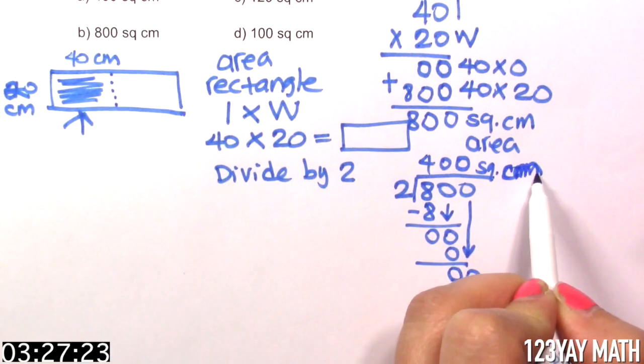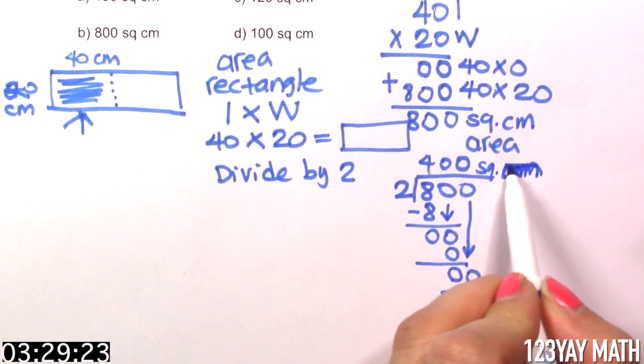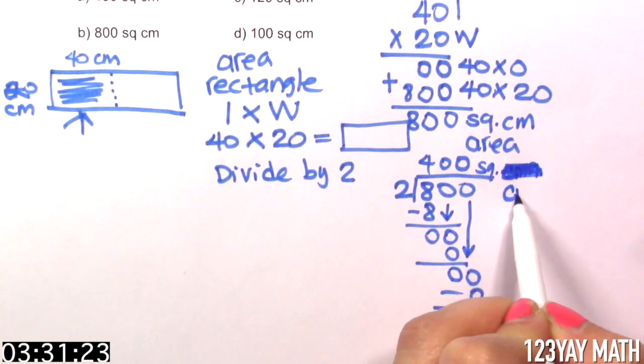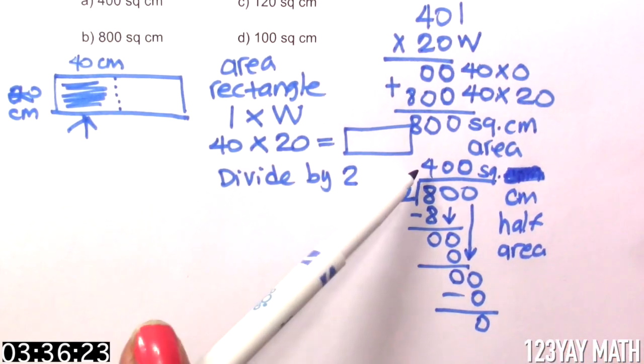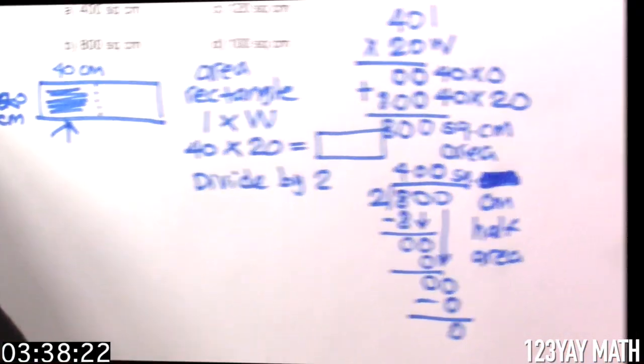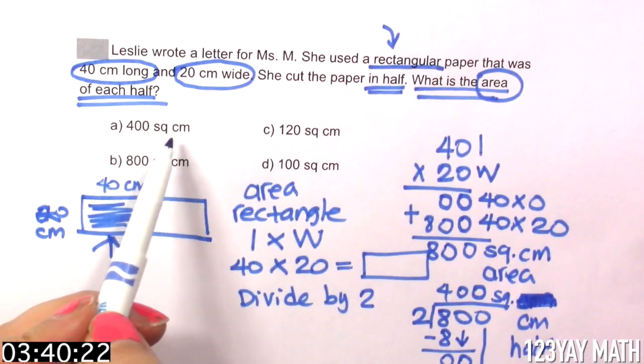So this is our final answer: 400 square centimeters. I put CM. Oh my God, I'm so sorry. CM is half area. Let's look for this answer in our options.